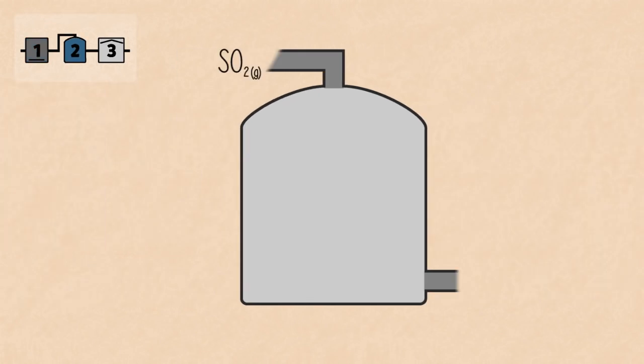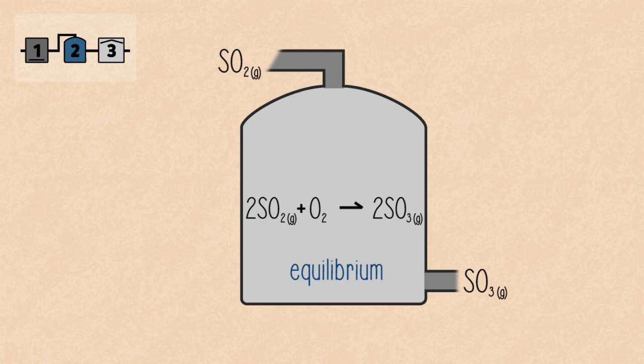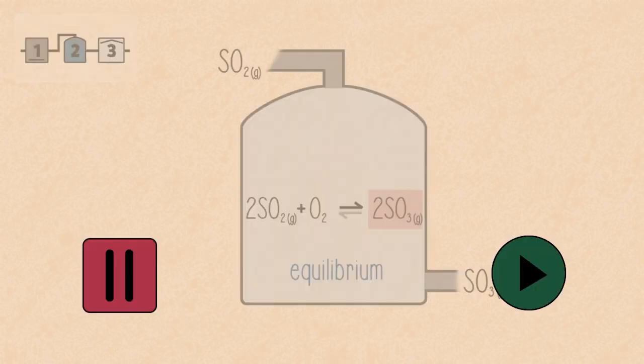In stage 2, the sulfur dioxide is converted into sulfur trioxide. The reaction is in equilibrium, which means that as the product is formed, the reverse reaction can also occur and it can break down into its reactants. What can be done to this process to speed it up and to force the equilibrium into forming more sulfur trioxide? Pause the video and continue when ready.